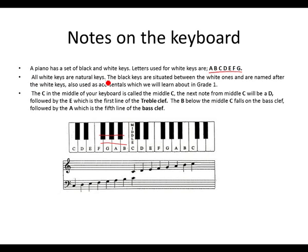All white keys are called natural keys. The black keys are situated between the white ones, and they are named after the white keys. For example, this is called the middle C. The first black note after the middle C is called a C sharp. This is D, and the black note is called a D sharp when going up — named after the white natural D. We will also look at black keys as accidentals in the following chapters of Grade 1.